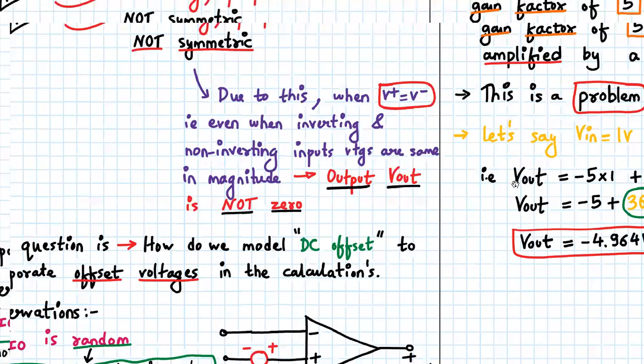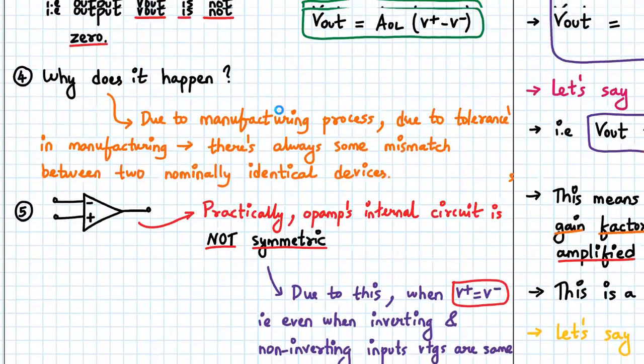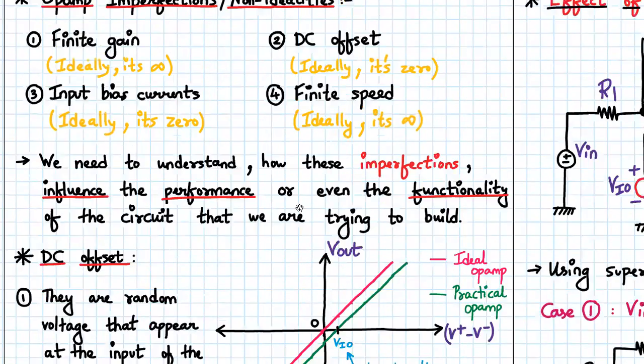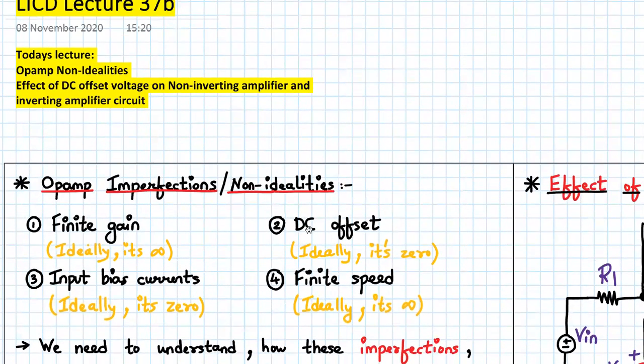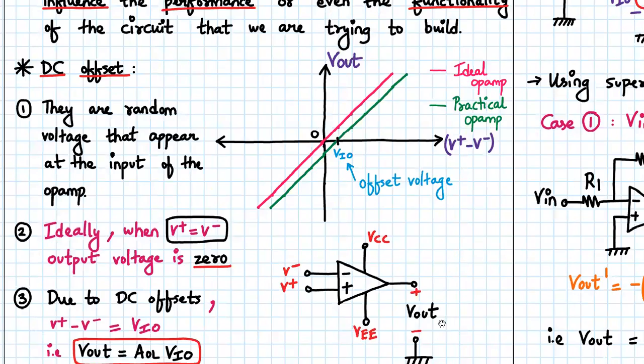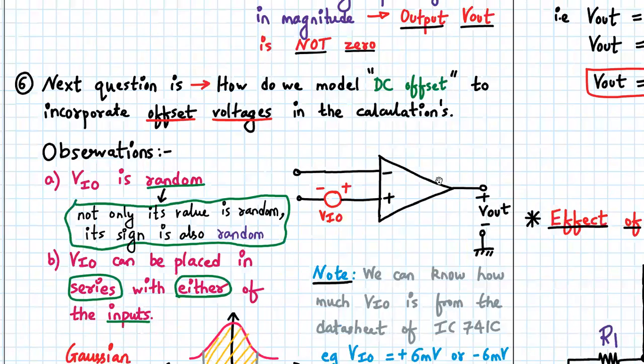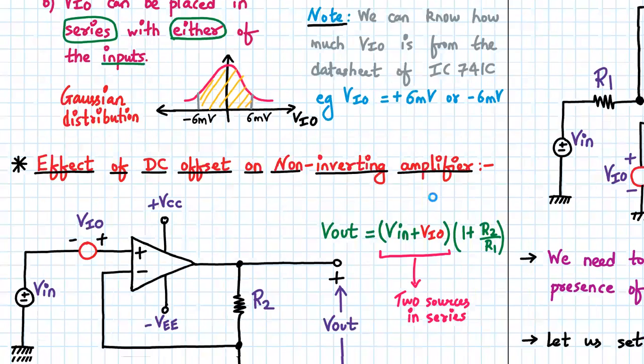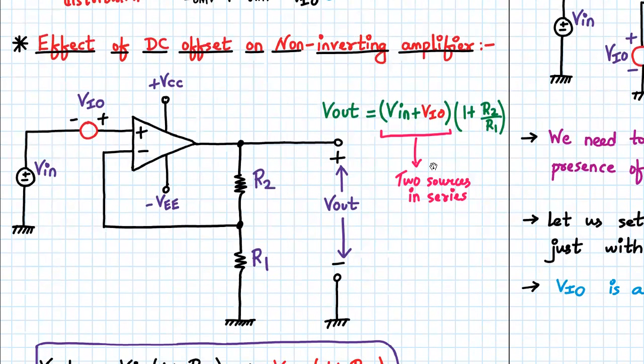That's it for this lecture. We have covered the introduction of op-amp imperfections or non-idealities, and we have seen what DC offset error is, how we model it, and the effect of DC offset on inverting and non-inverting amplifiers. Next time we'll start with the effect of DC offset on the op-amp integrator. Until then, have a good day and thank you.